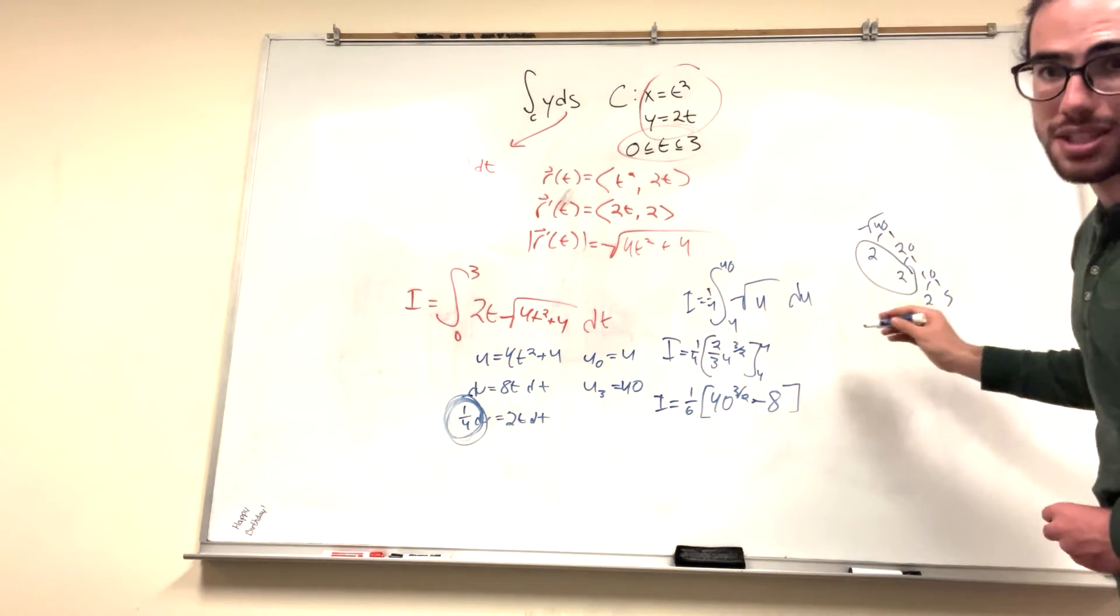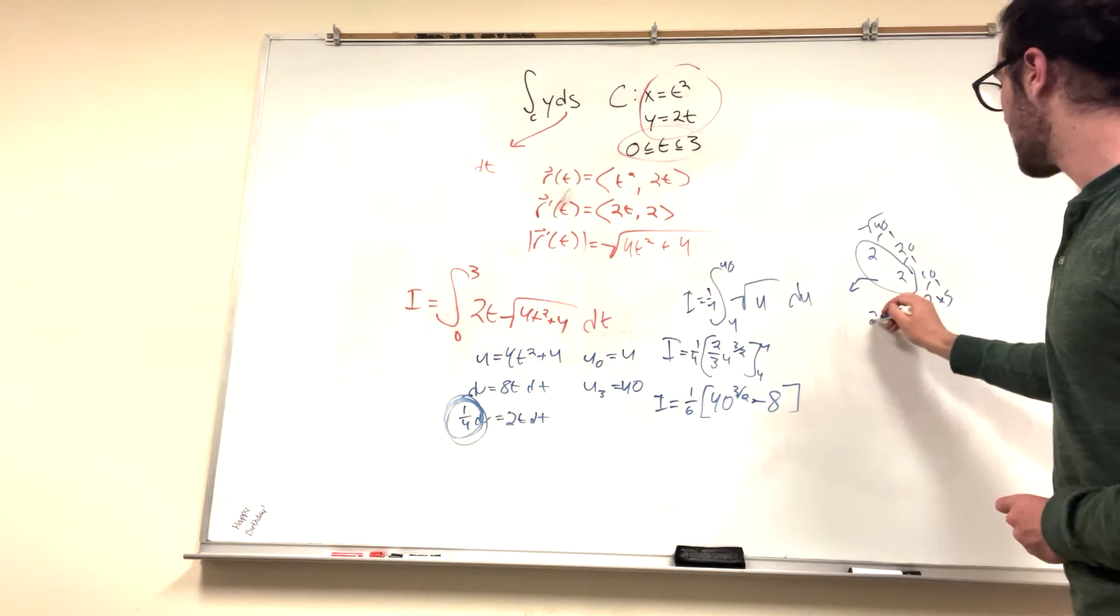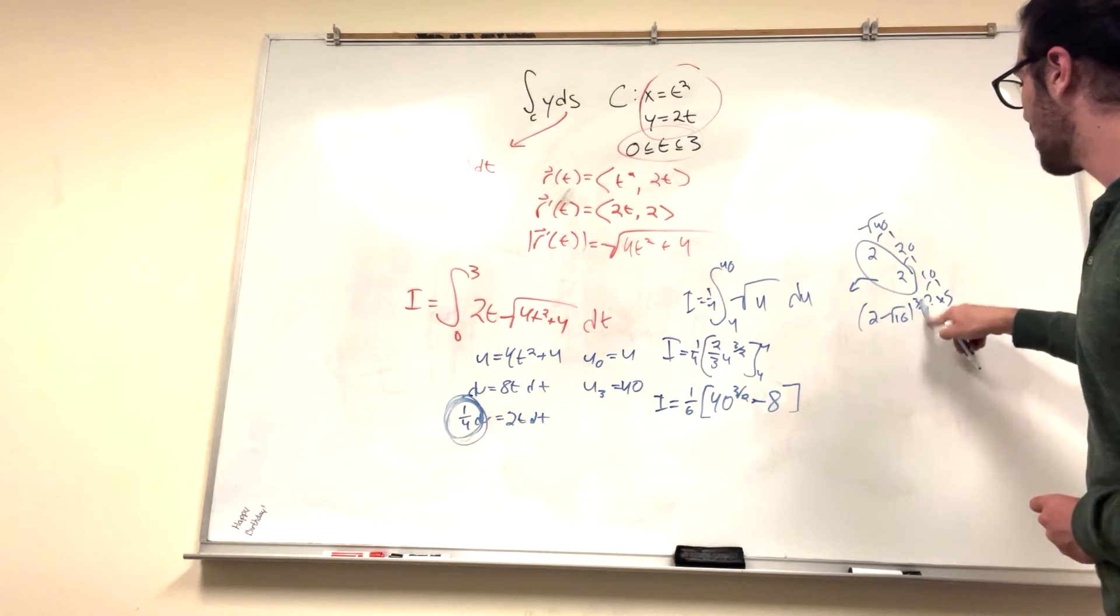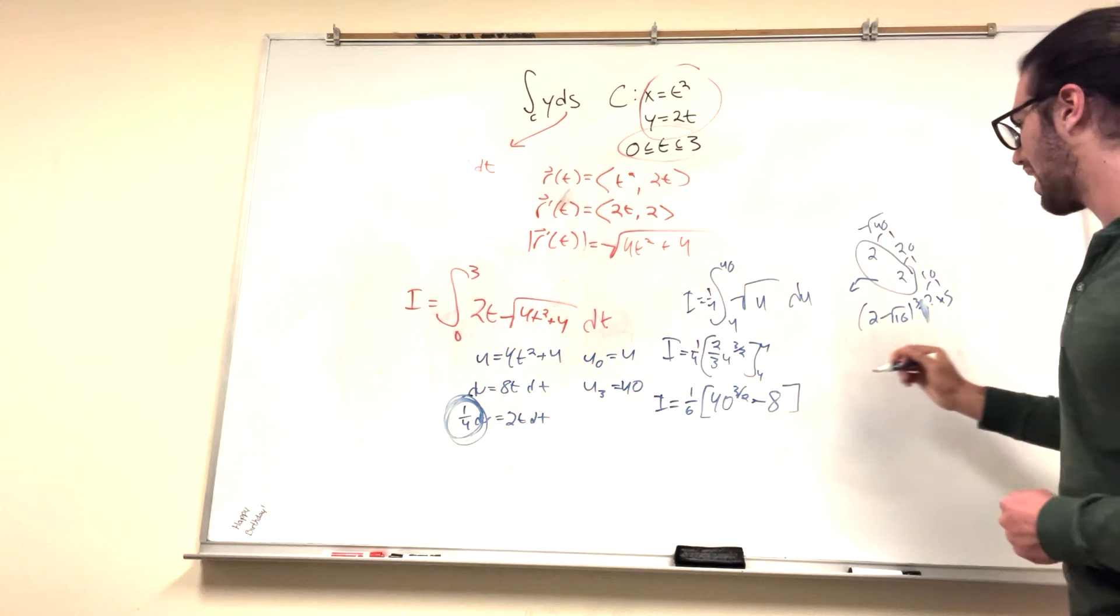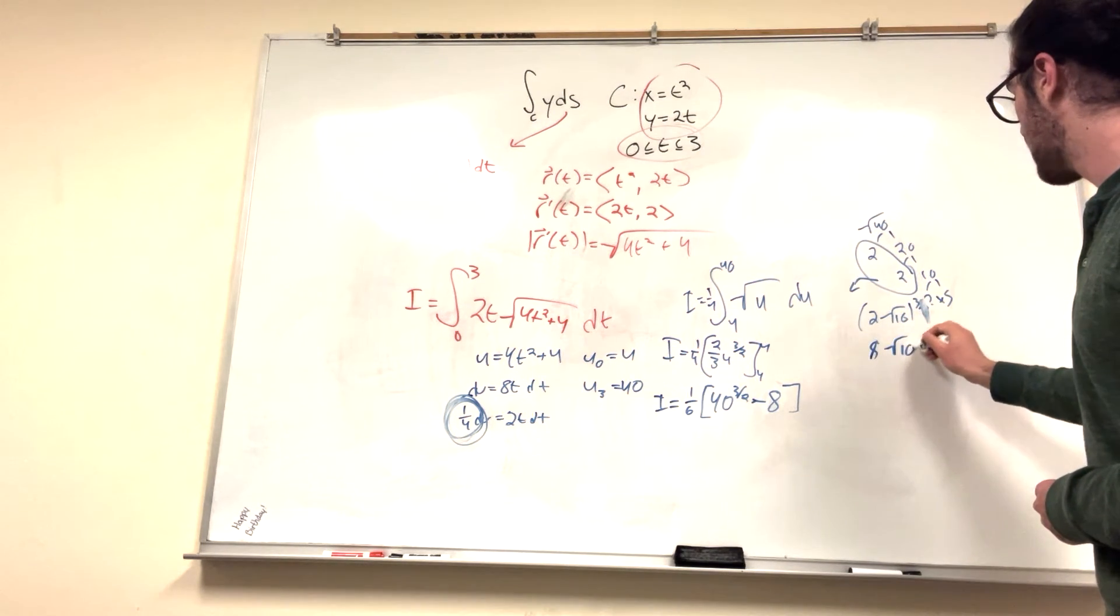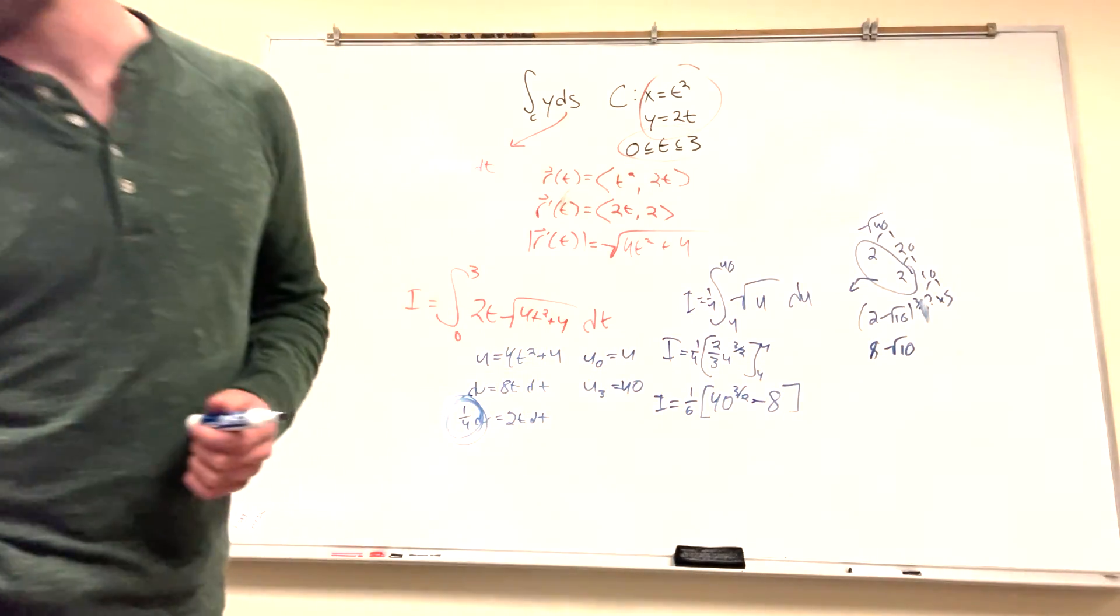So you have 2 here, two 2s here that can match, which means you can bring out a 2 and then these next two numbers will multiply. So this is all to the 3 halves. Or this is all to the third, basically, because you just brought out the 1 half. So if you multiply that, you get 8 square root of 10. Right? Hold on, let me see. Make sure this is right.